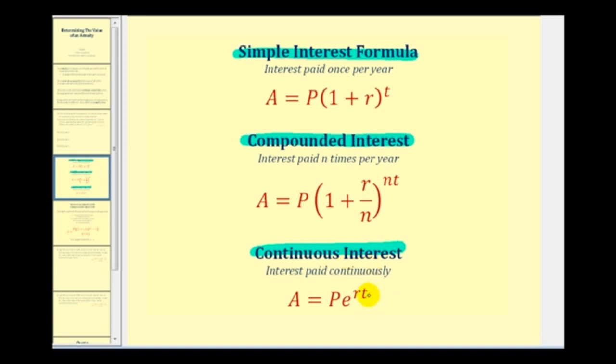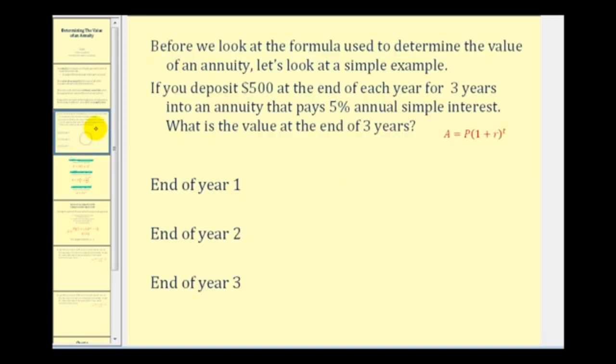Let's take a look at a basic example before we look at the formula used to determine the value of an annuity. Let's say you deposit $500 at the end of each year for three years into an annuity that pays 5% annual simple interest. What is the value at the end of three years? If we're making the deposits at the end of the year, at the end of the first year, we would make our first deposit of $500, so the value would just be $500.